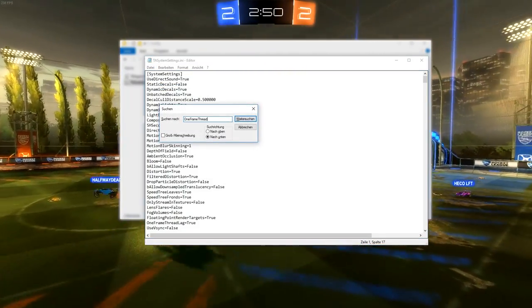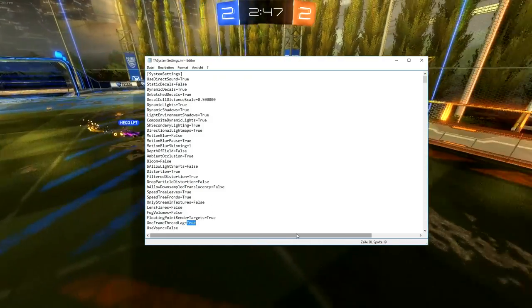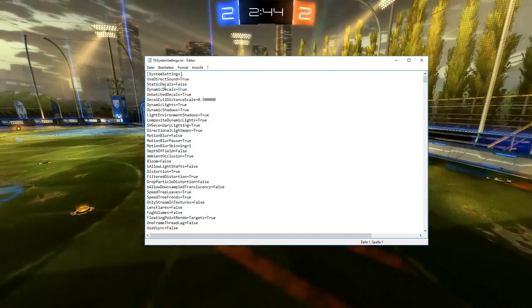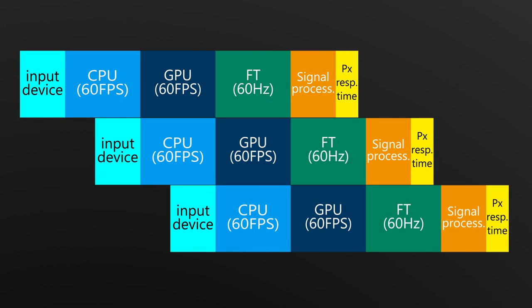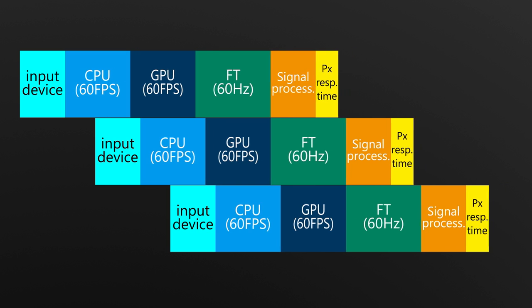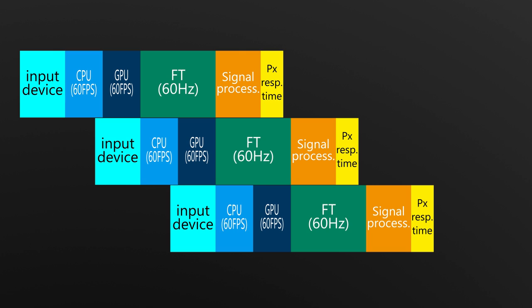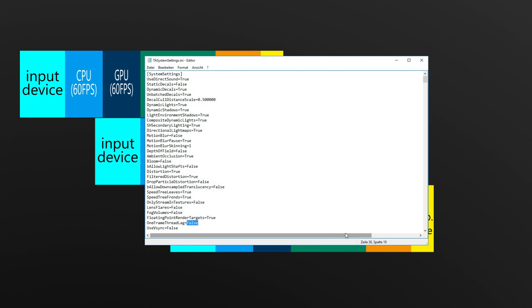The other setting is called 'OneFrameThreadLag' and is located in the same file, but should be used with caution. The engine usually uses a technique known as pipelining, which means that while the GPU is still working on one frame the CPU will already work on the next. This way the CPU and GPU can both work almost 100% of the time, giving the most performance. However it will also mean that the CPU will be processing inputs one frame ahead of the GPU, introducing up to one frame of input lag. If you turn this off you will lose a significant amount of performance because the CPU and GPU have to share one time frame. If you can't keep at least 150fps with OneFrameThreadLag off, turn it back on again.